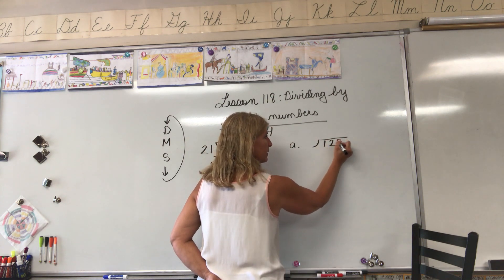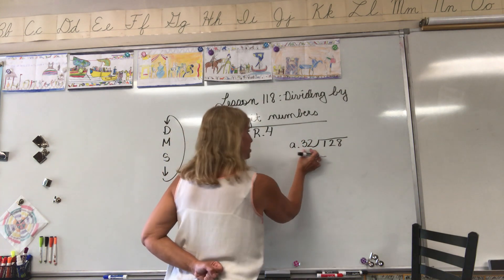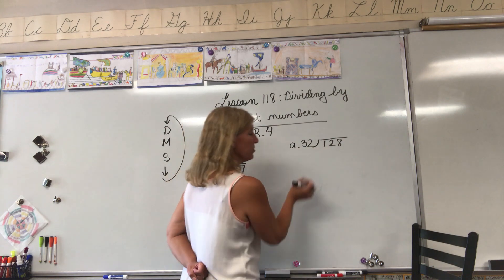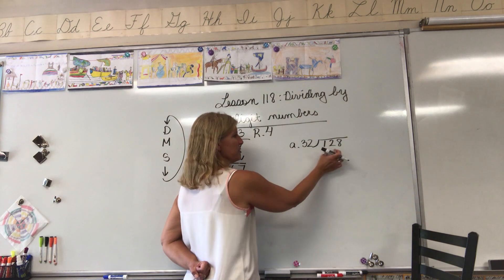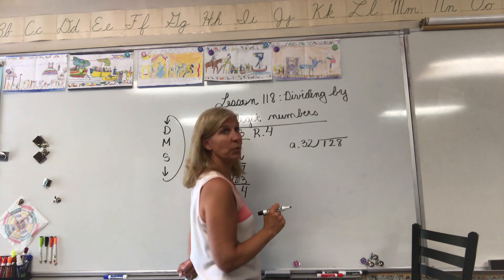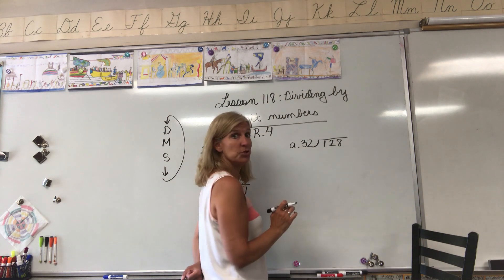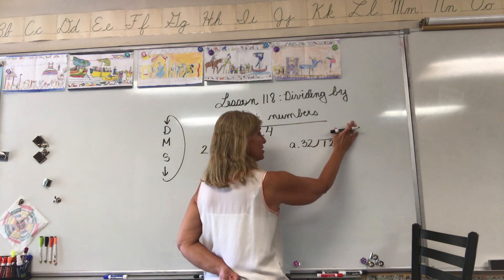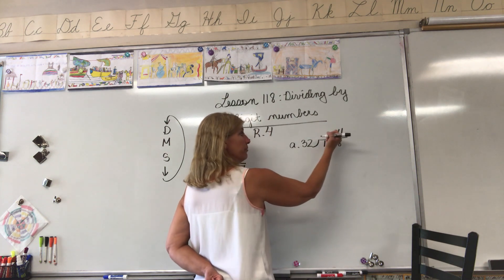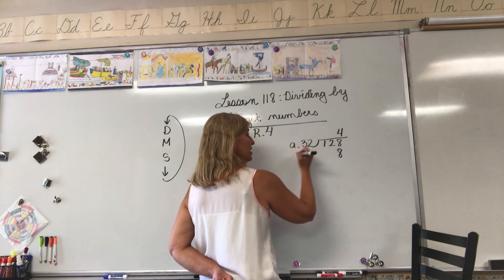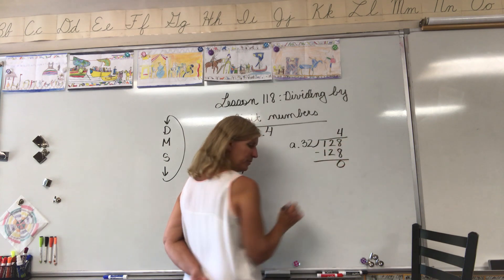128 divided by 32. Does 32 go into 1? No, 1 is smaller than 32. Does 32 go into 12? No, 32 is much bigger than 12. So that means we have to divide into 128. Let's think how many, let's round that. How many 30s would be in 120? How many 3s would be in 12? 4. Let's try 4, we'll give it a shot. 4 times 2 equals 8, 4 times 3 equals 12.